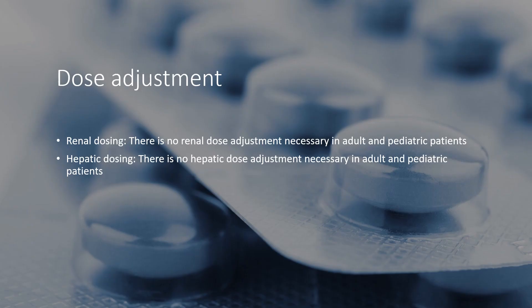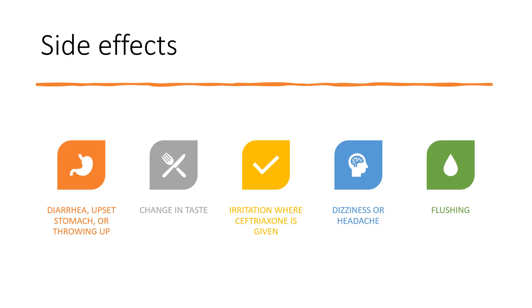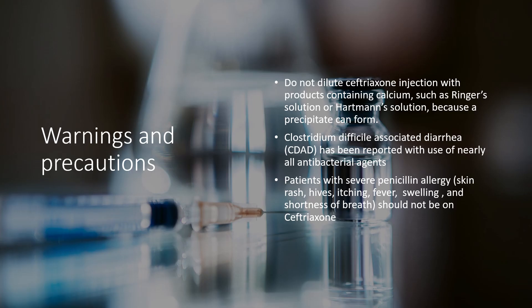For dose adjustment, there is no renal or hepatic dose adjustment necessary in adult and pediatric patients. There are many side effects regarding ceftriaxone — patients can experience diarrhea, upset stomach, vomiting, change in taste, irritation at the injection site, dizziness, headache, and flushing.